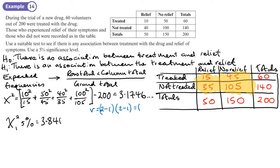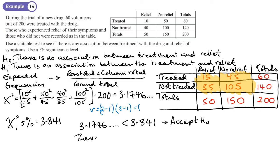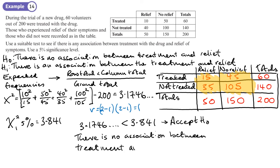They're very close — my 3.1746 is less than the critical value of 3.841, just. So I accept H0. My conclusion is that there is no association between treatment and relief.